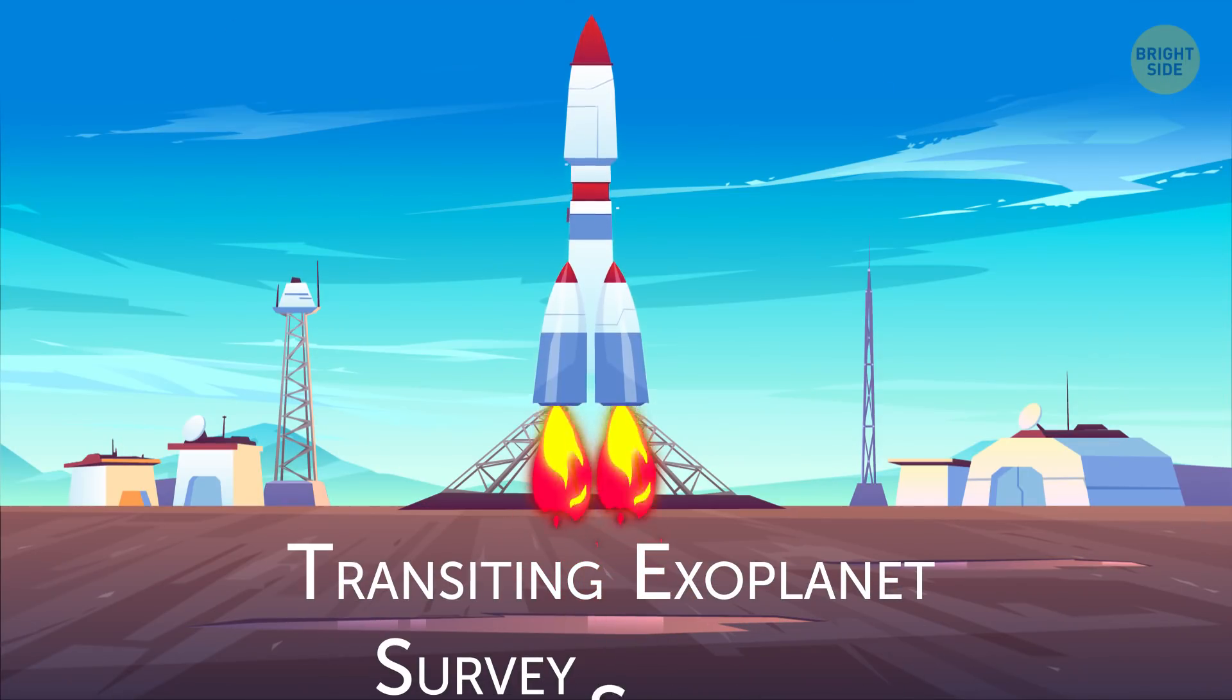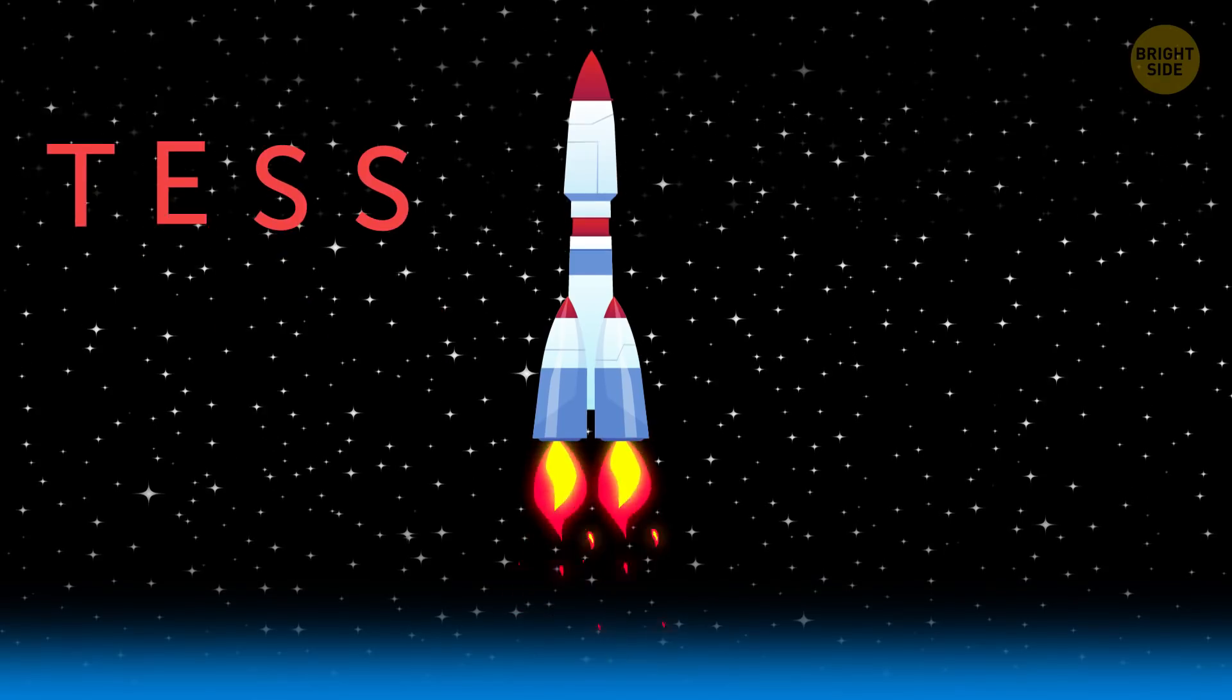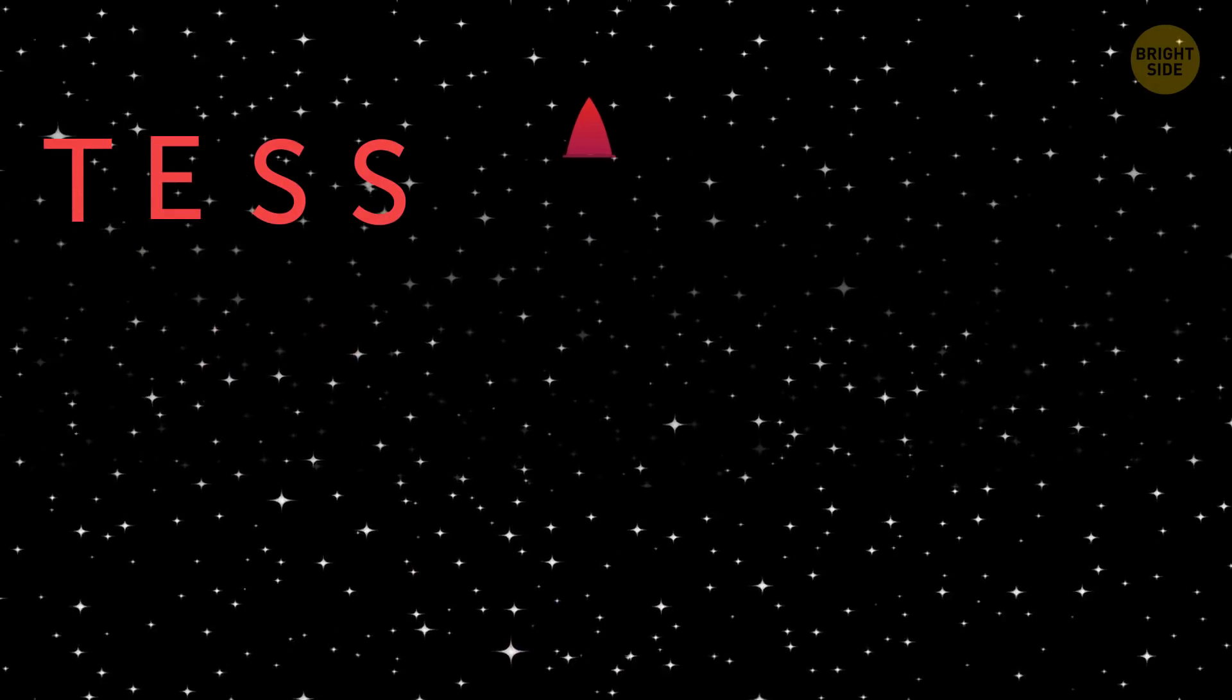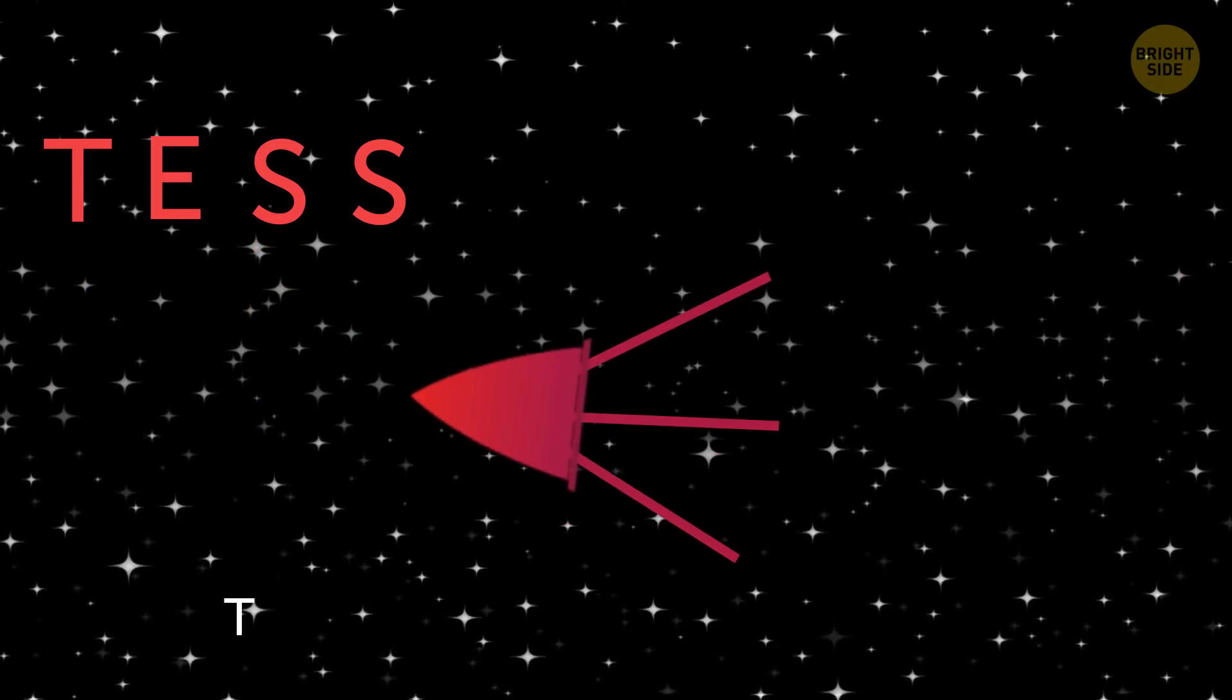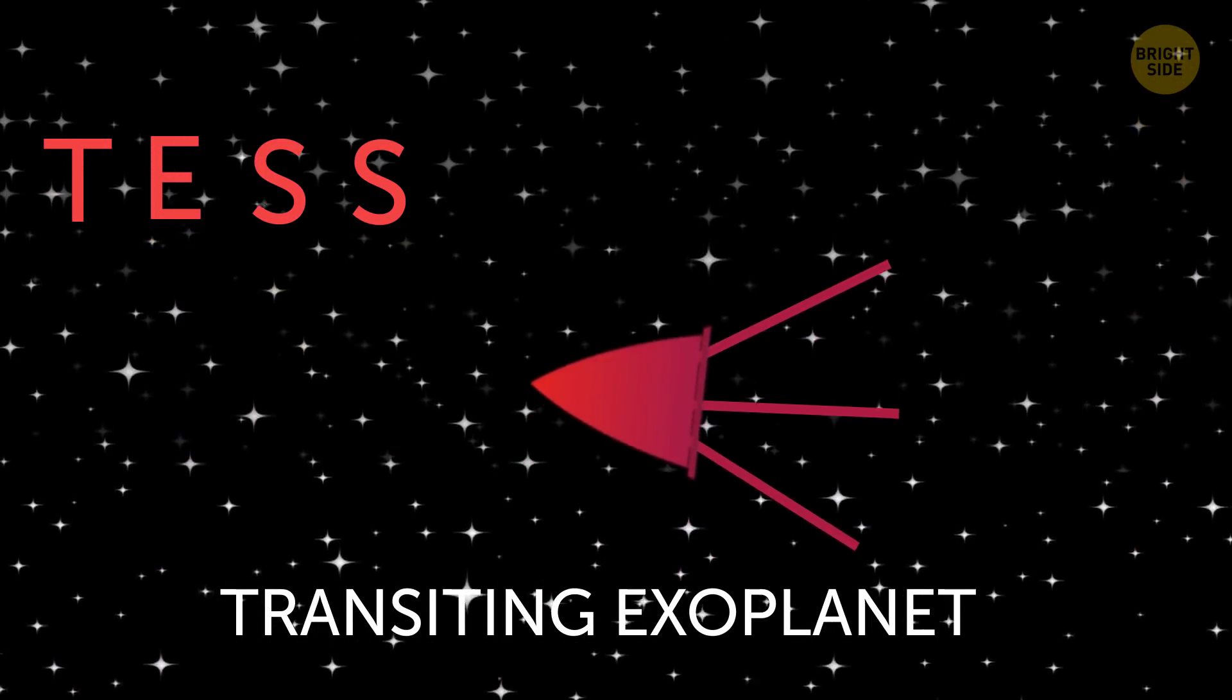The Transiting Exoplanet Survey Satellite – what a mouthful – was launched in April of 2019 with the aim of locating planets in orbit around nearby stars. That's what transiting exoplanet means in astronomer talk.